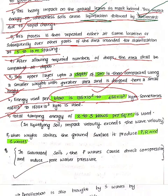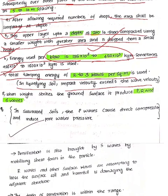When the weight strikes the ground surface, it produces P, R, and S waves. In saturated soils, P waves cause direct compression and induce more water pressure.